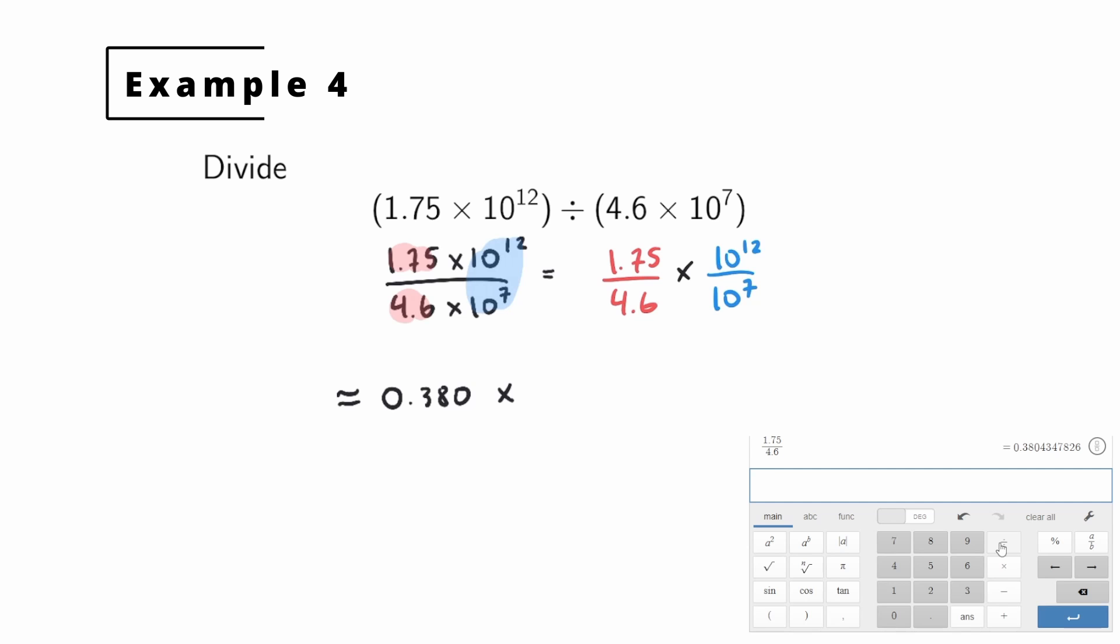This is going to be 0.380. We round to 3.80 since the number to the right of the zero is a 4. Then we have times 10 to the 12th over 10 to the 7th. We use properties of exponents. When we have these exponential expressions with the same base, the base for both is 10, when we divide them, we simply subtract the exponents. So it's going to be 10 to the 12 minus 7, which is 10 to the 5th.